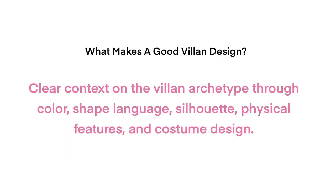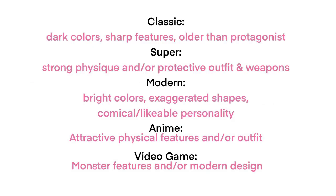In conclusion, a good villain design gives clear context on the villain archetype through color, shape language, silhouette, physical features, and costume design. There are five main types of villain design, which are classic, super, modern, anime, and video game. Many villains are a combination of two or even three of these design styles. I hope you enjoyed this video — please like, subscribe, and leave a comment on some of your favorite villains. Dream big, live bold, and keep on creating. I'll see you next time!